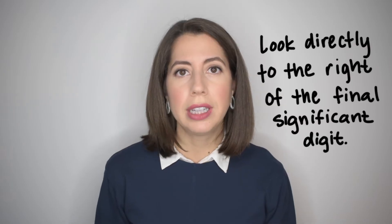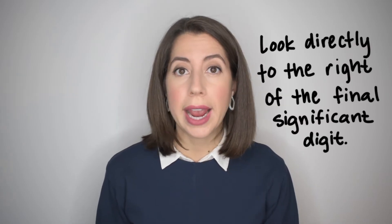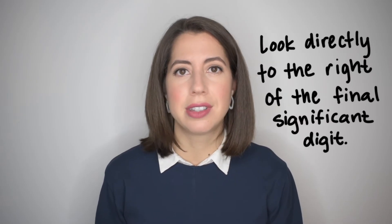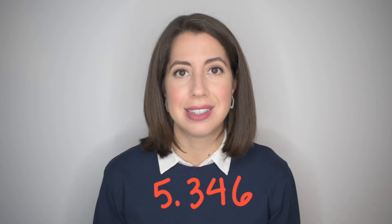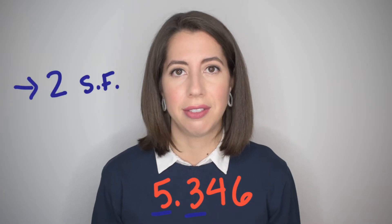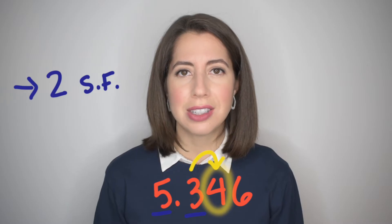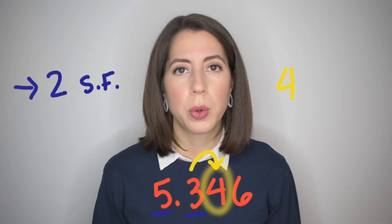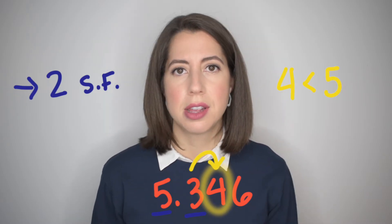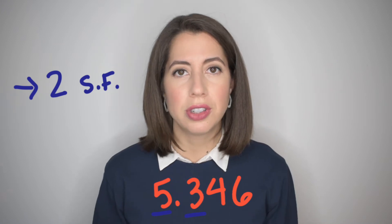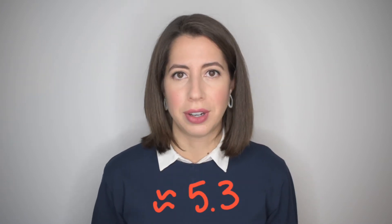When rounding to obtain the number of significant figures, only look to the digit directly to the right of the final significant digit. For example, if we need to round 5.346 to 2 significant figures, we look only at the 4 because it's directly to the right of the 3. The 4 being less than 5 means the 3 stays the same. Round it to 2 significant figures, the answer is 5.3.